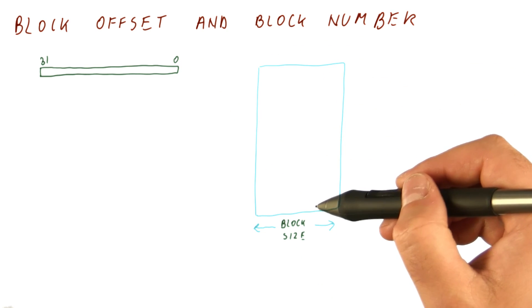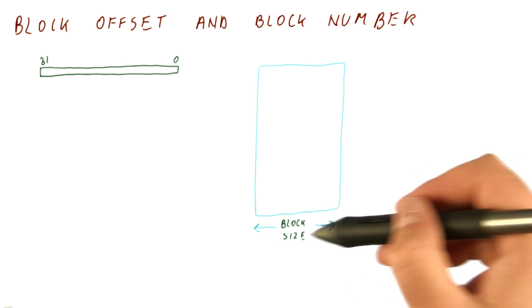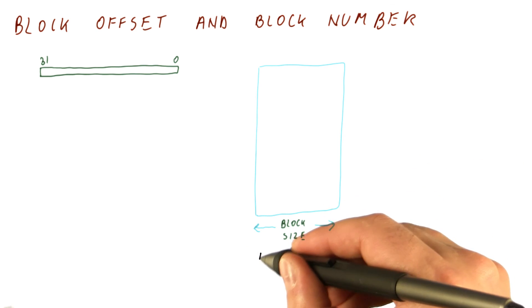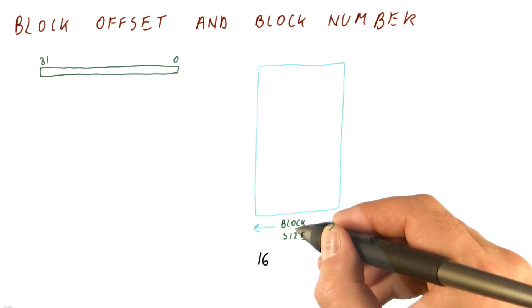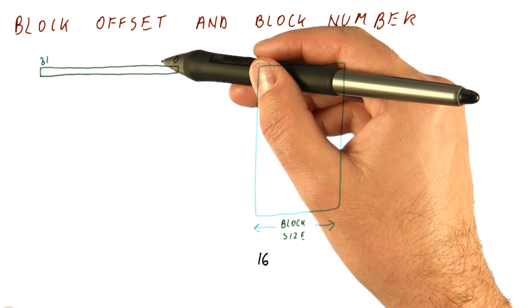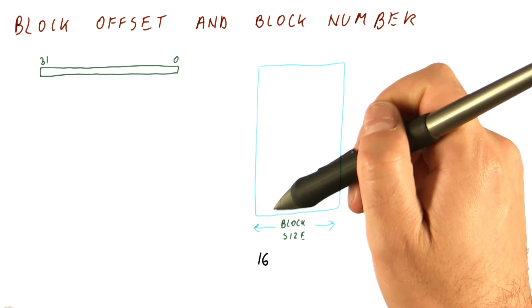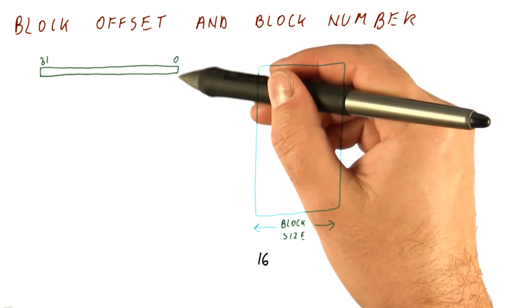The cache can be seen as an array of lines, each block size in size. In this example, let's look at 16 as the block size. Some bits of this address tell us which block we are talking about, and some bits tell us where in the block we are looking for our data.